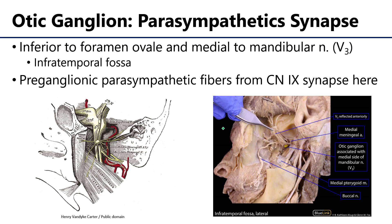On the other side of the foramen ovale is not only the bulk of V3, but also — deep to this — the otic ganglion. The otic ganglion is a parasympathetic ganglion where the preganglionic parasympathetic fibers that have traveled from nine along the course of the tympanic nerve, tympanic plexus, and lesser petrosal are then going to synapse. From there, postganglionic fibers are going to head posteriorly along the auriculotemporal nerve.